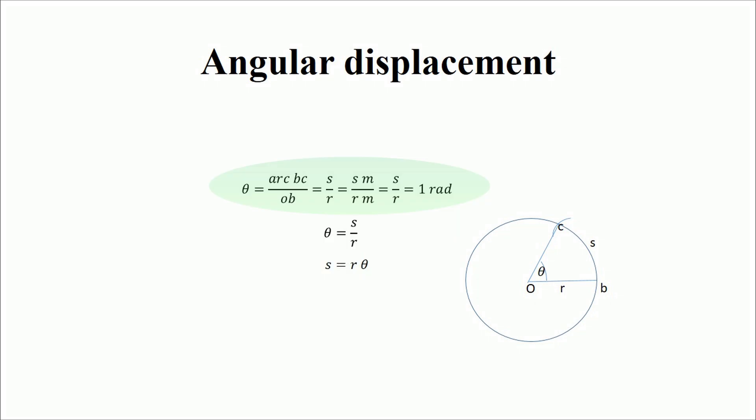The angle theta formed at the center is defined as the ratio between the arc length S and the radius R. This relationship can be expressed as theta equals arc length S divided by radius R. Here, both the arc length S and the radius R are measured in meters, so the units cancel out, leaving theta dimensionless. This is why theta is considered a dimensionless quantity.